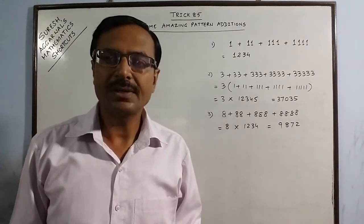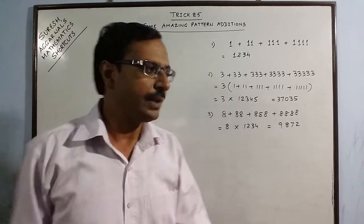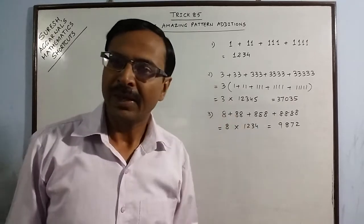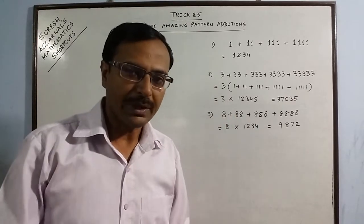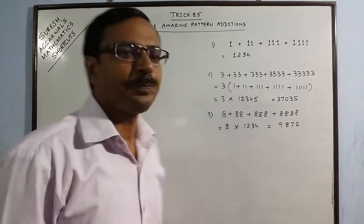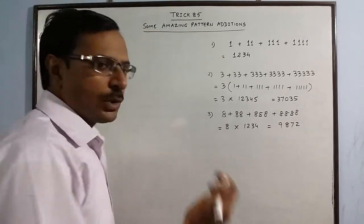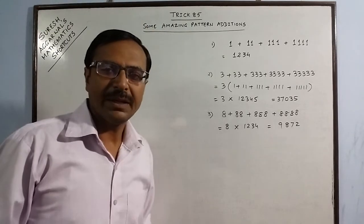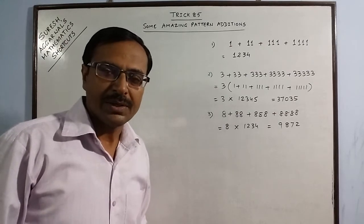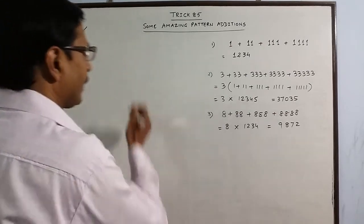This involves use of only one step — multiplication — and you don't have to write the question all over again. Now let us extend this method to find the sum of some decimal numbers as well.